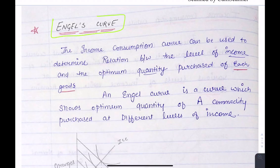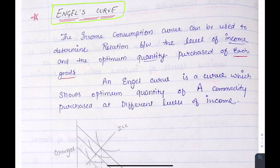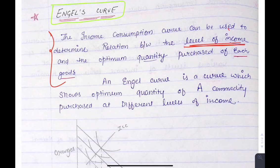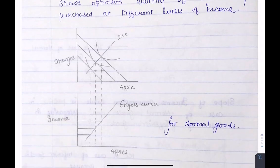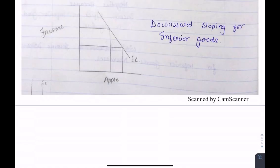Last, we come to Engel's curve. The Engel's curve shows the relationship between our income level and how much of each good we have purchased. It represents: first, level of income; and second, quantity purchased of each good. The shape for normal goods is upward sloping because the ICC was upward sloping. For inferior goods, it is downward sloping because the ICC was backward bending.